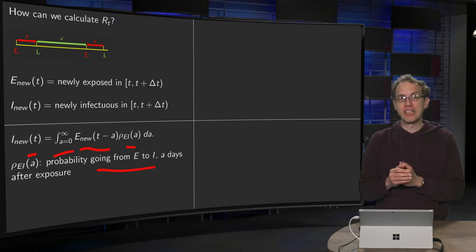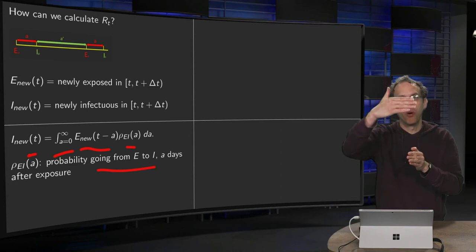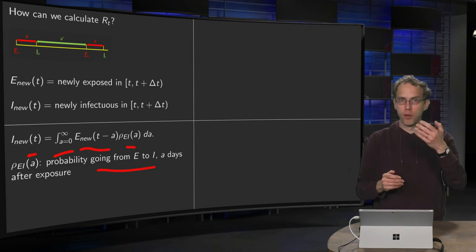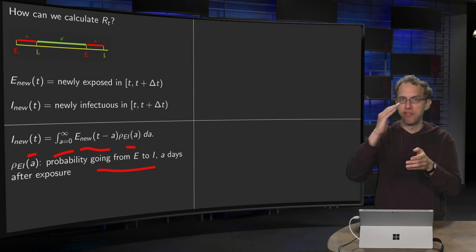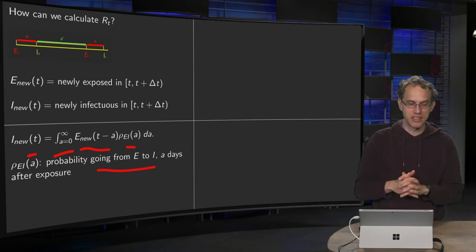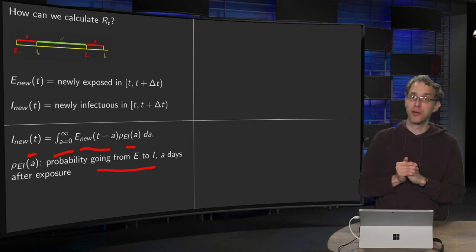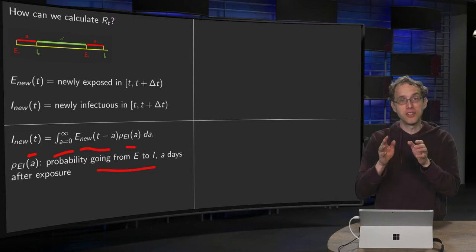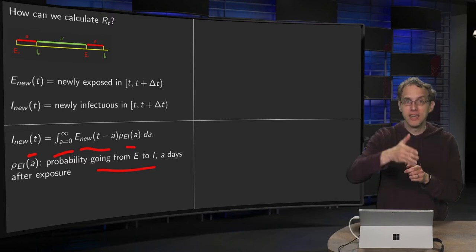Well, in fact, this a will probably run not from zero all the way up to infinity, but probably from say zero days to five, six, seven days, something like that. But formally, we'll put the plus infinity in the upper boundary. So that tells you how you go from E to I.